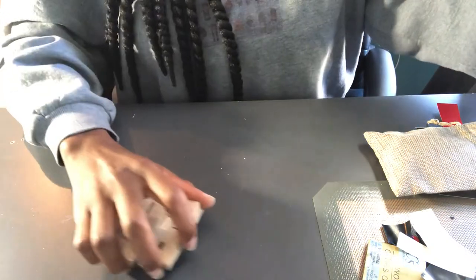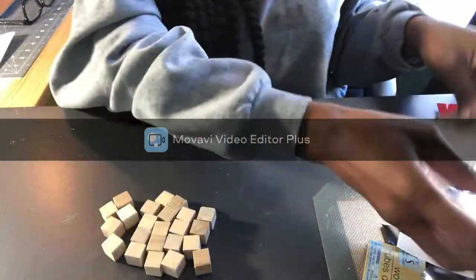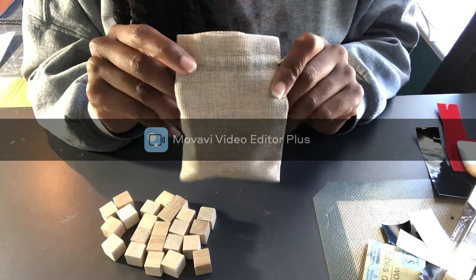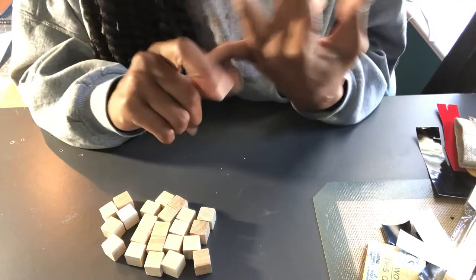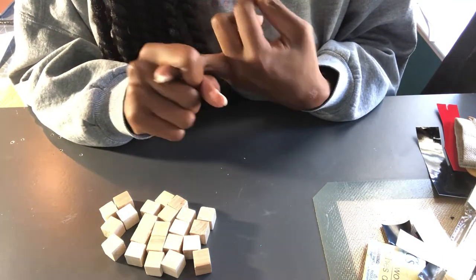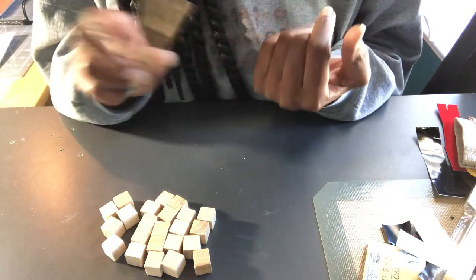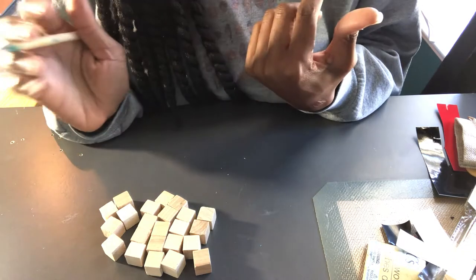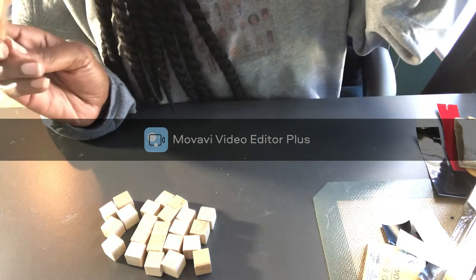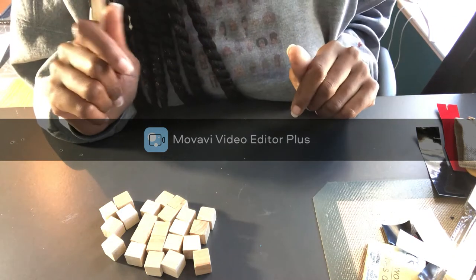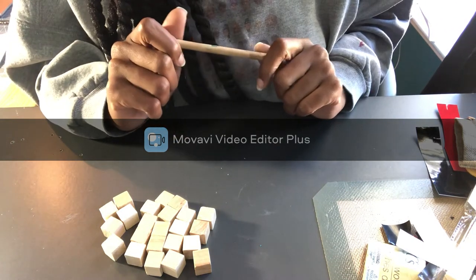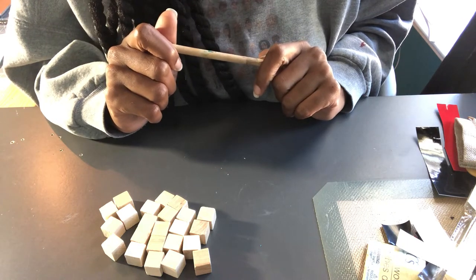All right y'all, so the items you will need for this project include these cubes - you can get these wood craft cubes from the Dollar Tree. You'll also need this type of burlap bag you can purchase from Amazon, I will have it listed in the description box below. You'll need some heat transfer vinyl, some regular 651 vinyl, transfer tape, a weeding tool to weed out your design, and a program that allows you to cut out vinyl and HTV. I will be using Cricut Design Space. I believe that is all that you'll need for this project. If I miss anything I will definitely put it in the description box below.